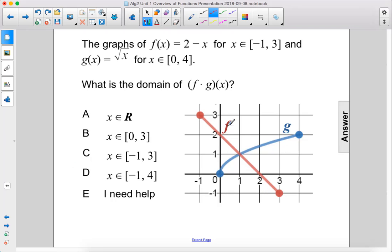The graphs of f(x) and g(x) are shown here. f(x) equals 2 minus x, the domain is from negative 1 to 3, and for g(x), which is the square root of x, we have the domain from 0 to 4.